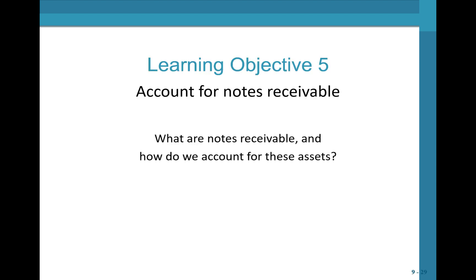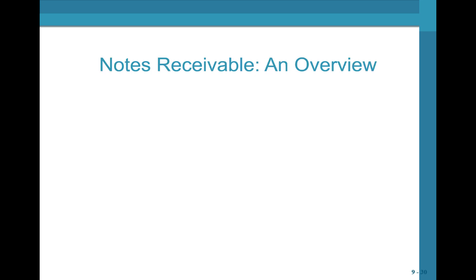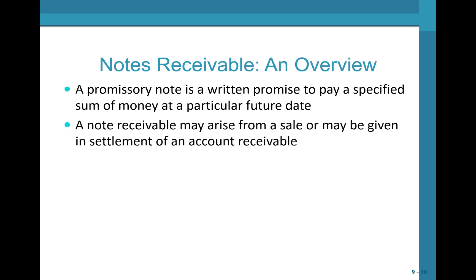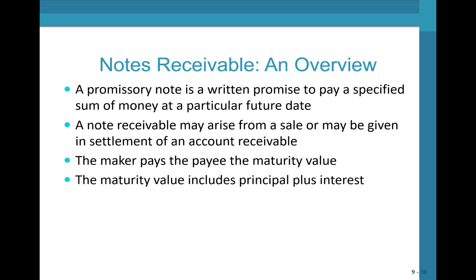Let's talk about accounting for notes receivable. A promissory note is a written promise to pay a specified sum of money at a particular future date. A note receivable may arise from a sale or can be given in settlement of an existing AR. The maker of the note pays the payee the maturity value, which includes principal plus interest.